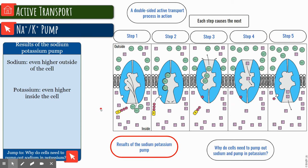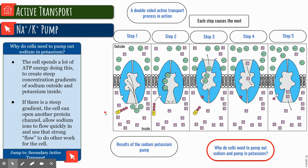The result is that you have even more sodium on the outside, compared here to here, even more sodium, and even more potassium on the inside of the cell. So why does this need to happen? Why do we need to pump out sodium and pump in potassium?